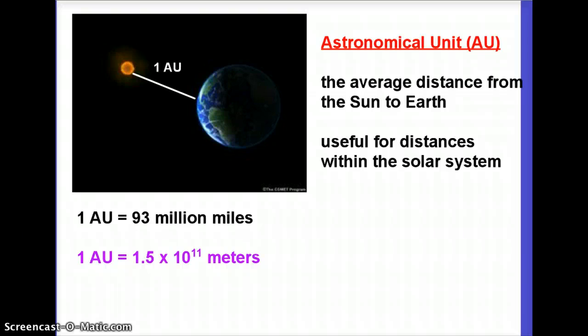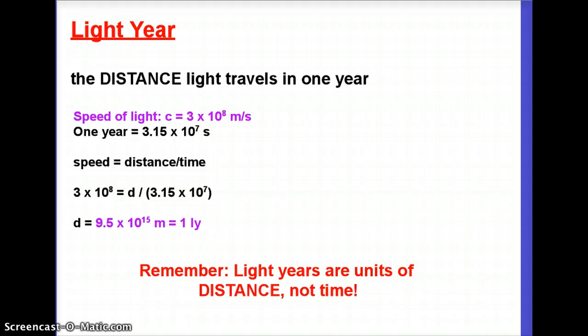The distance to stars may be tens or hundreds of thousands of astronomical units, which is manageable but still unwieldy. So the other major unit used in astronomy is the light year. A light year is a distance — it is the distance that light travels in one year. It's not an amount of time, even though it sounds like one because of the word 'year.'